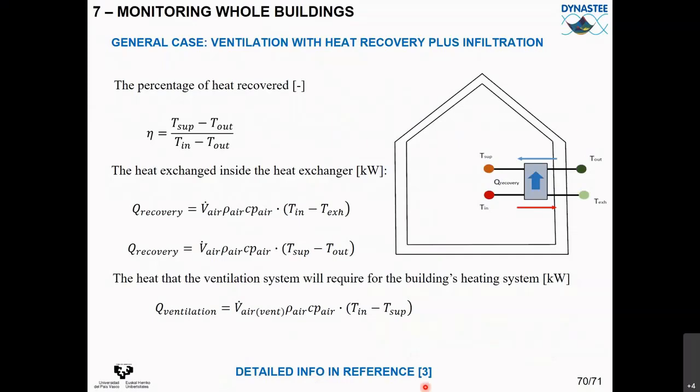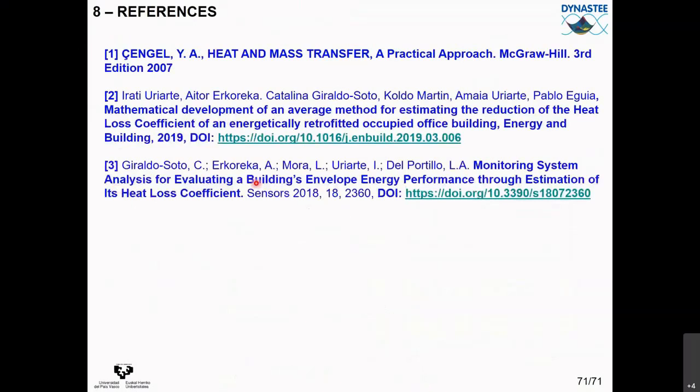Temperature, CO2, and relative humidity measurements in buildings use aesthetically suitable commercial sensors. Electricity consumption is measured with wattmeters in electrical boards, giving kilowatt-hours consumed per thermal zone. Ventilation system measurements require supply temperature, indoor temperature, outdoor temperature, exhaust temperature, and volumetric flow rates to calculate the ventilation heat loss coefficients. All information about monitoring and measuring in buildings is in the third reference provided. This presentation covered the physics of the building envelope in the first part and measurements in the second part. Three references are provided for further reading.